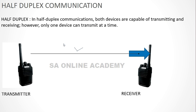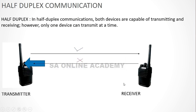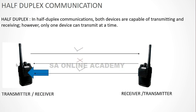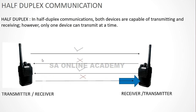You can see that one device is acting as a transmitter first and the other is acting as a receiver. The receiver can't act as a transmitter at the same time. However, when that receiver acts as a transmitter, the original transmitter then acts as a receiver. Both functionalities are available, but not at the same time — this is known as half duplex communication.